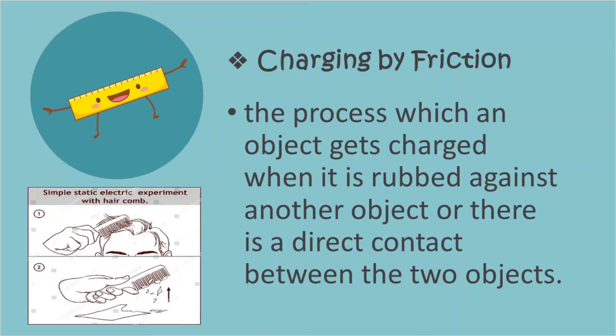Friction refers to the force that resists motion whenever two materials are in contact with each other. Our example for this one are the bits of paper that is attracted to the comb after using it.